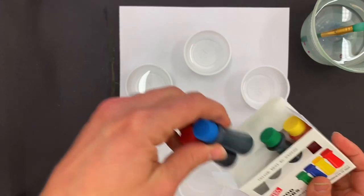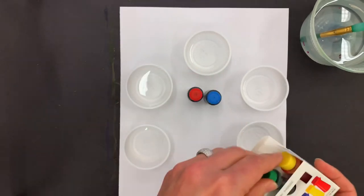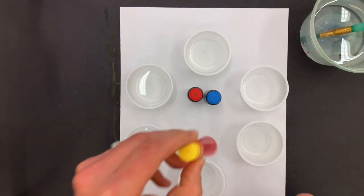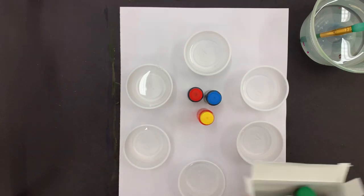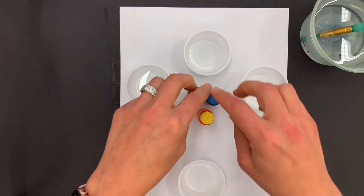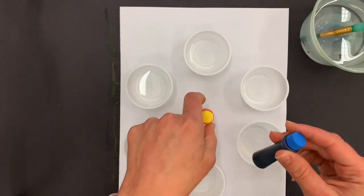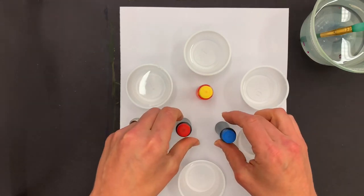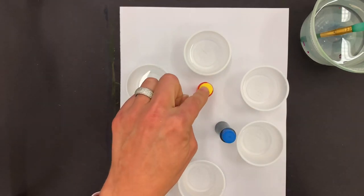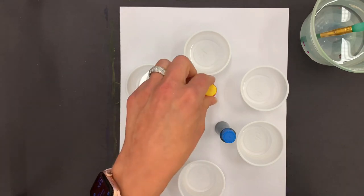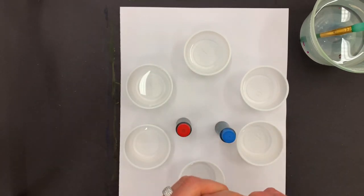Now we're going to use the primary colors. We could use green, but why use green when you can make green? So my primary colors are red, yellow, and blue. Now yellow is the weakest and it takes the most to make color.